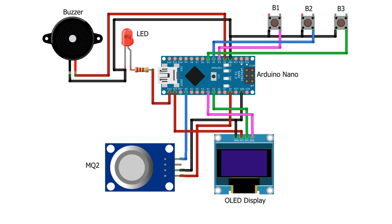Here is the circuit diagram. The MQ2 sensor analog pin is connected to the A0 pin of the Arduino, and its VCC and GND are connected to the 5V and GND pins of the Arduino respectively. The I2C OLED VCC pin is connected to the 3.3V pin of the Arduino, and its GND pin is connected to the GND pin of the Arduino.